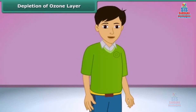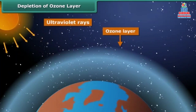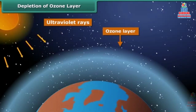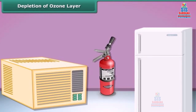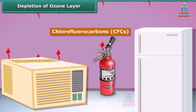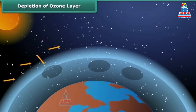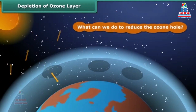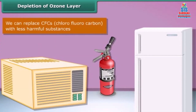Let us learn about the ozone layer. It is a layer of ozone gas in the upper atmosphere of Earth. It protects us from harmful ultraviolet rays of the sun. Things like air conditioners, refrigerators, and fire extinguishers release chlorofluorocarbons, CFCs, into the atmosphere and create holes in the ozone layer. CFCs are another type of air pollutant. To reduce the ozone hole, we can replace CFCs with less harmful substances to save the ozone layer from depletion.